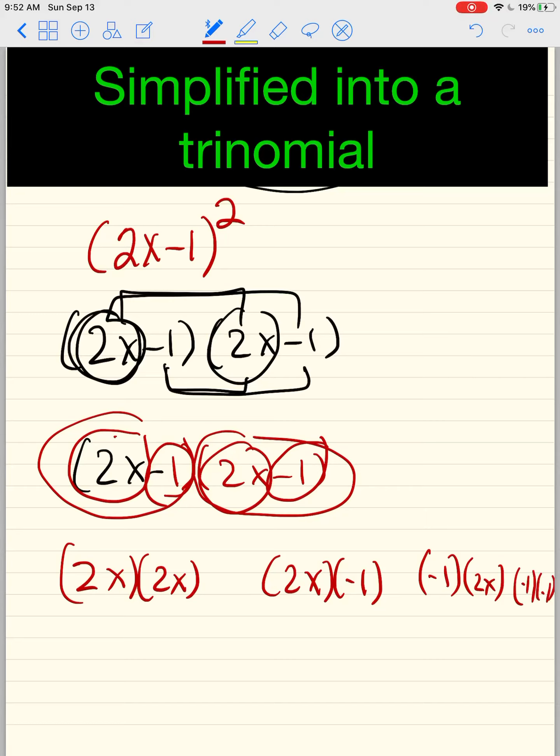Sorry, we ran out of room. So how do we multiply? 2x times 2x is 4x². 2x times -1 is -2x. Every number needs a sign in front of it. -1 times 2x is -2x. And -1 times -1 is positive 1, which is what we just had, okay?